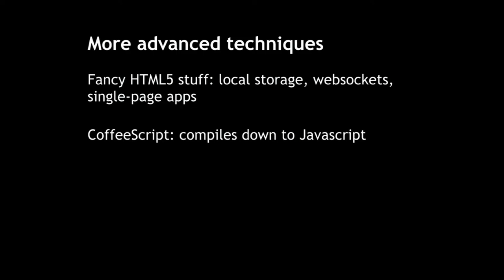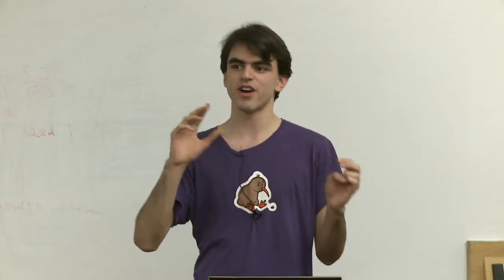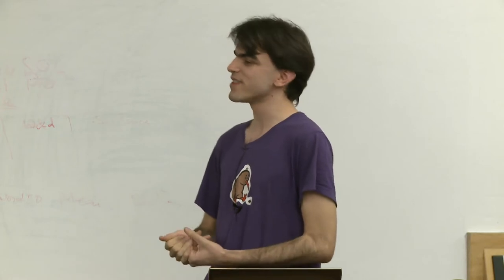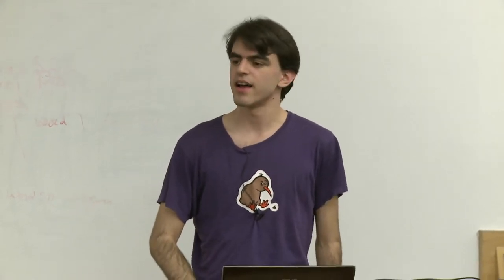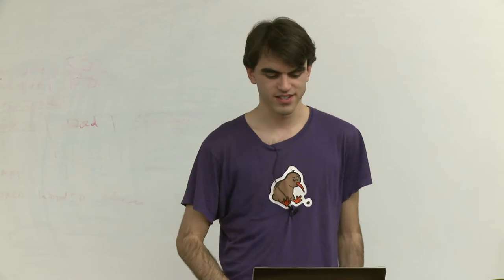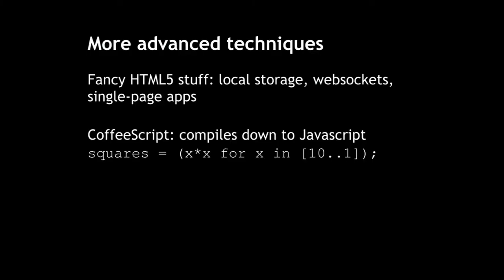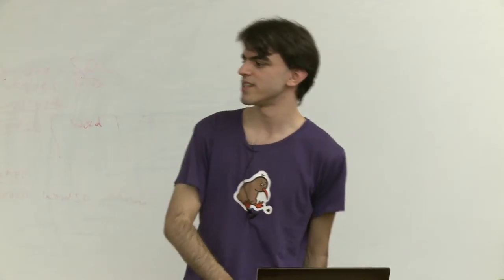There's also CoffeeScript, a language that compiles down to JavaScript. You write all your code in CoffeeScript, run the compiler, and it spits out a JavaScript file. CoffeeScript gets rid of a lot of the weird cases JavaScript has — like the difference between == and === — and it has nicer syntax for arrays and functions. A small snippet of CoffeeScript can produce a list of all the squares from 10 squared to 1 squared in reverse order. CoffeeScript often lets you express in one line what would take five lines of JavaScript, so it's a little new syntax to learn but will make you more productive.